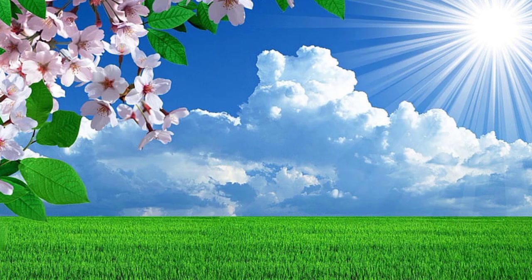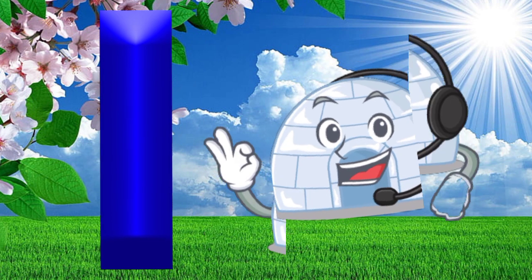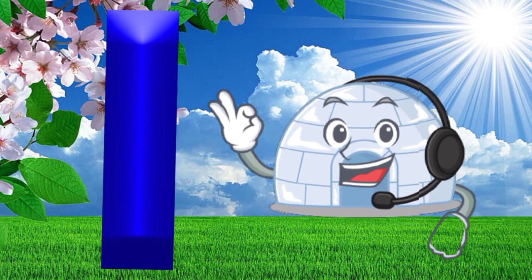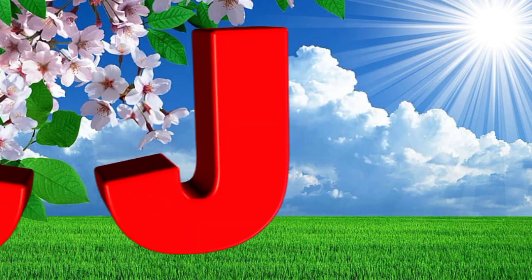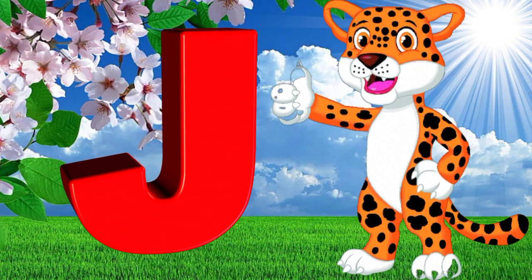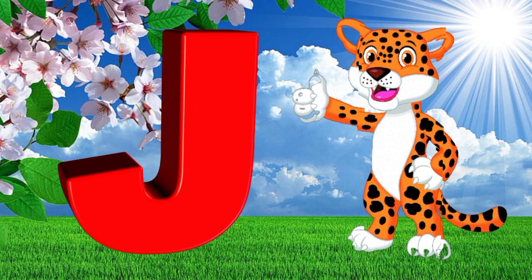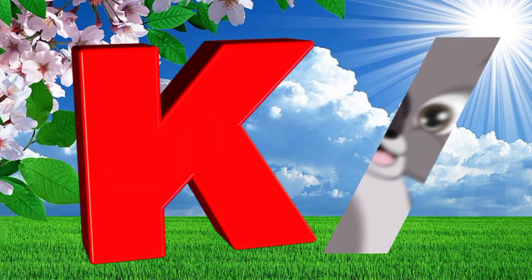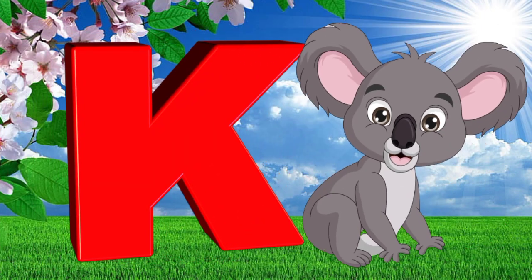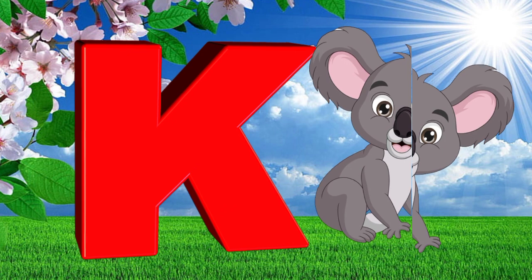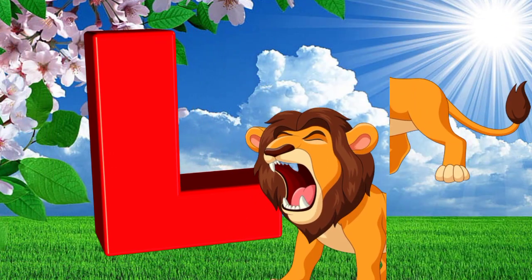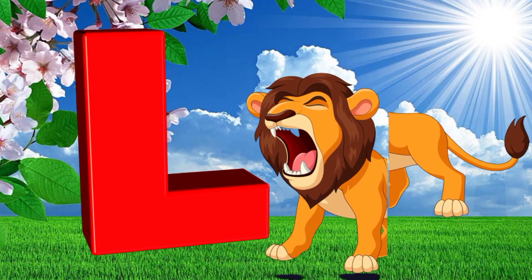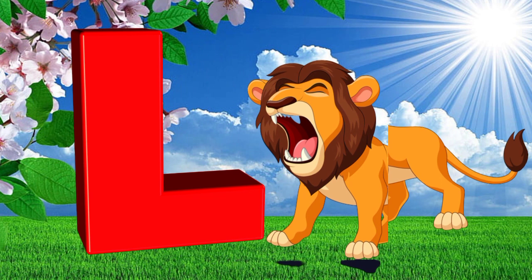I is for igloo, i-i-igloo. J is for jump, j-j-jump. K is for kangaroo, k-k-kangaroo. L is for lion, l-l-lion.